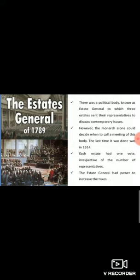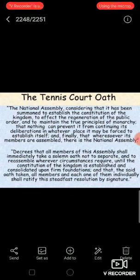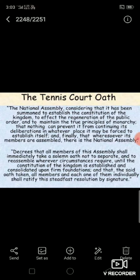The members of the third estate regarded themselves as spokesmen for the whole French nation. They declared themselves a National Assembly and vowed not to disperse until they had drafted a constitution for France that would limit the powers of the king. On 20th June 1789, the representatives assembled in the hall of an indoor tennis court in the grounds of Versailles, and again declared themselves a National Assembly.